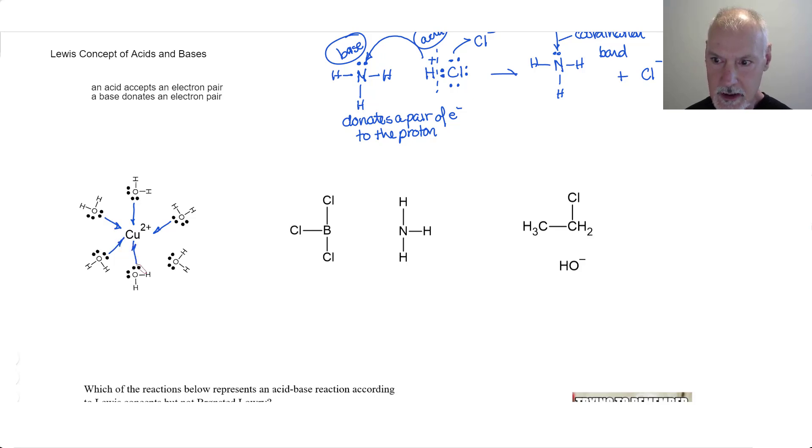So a copper ion is capable of accepting six pairs of electrons from neighboring water molecules. And since the copper accepts, it's acting as an acid. The water, our ligand, is donating pairs of electrons.